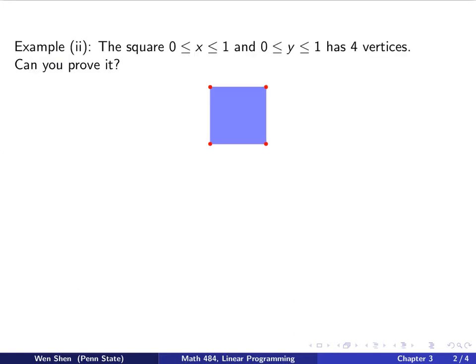Now let's look at a two-dimensional convex set. Let's say the unit square with one corner at the origin. For this set, there are four vertices: (0,0), (1,0), (1,1), and (0,1) are the four vertices of the square. Could you prove this rigorously as we did for example 1? Give it a try.